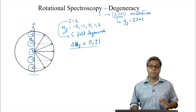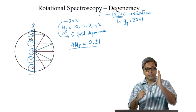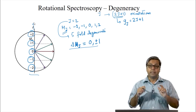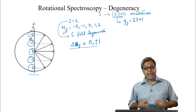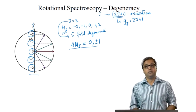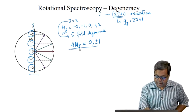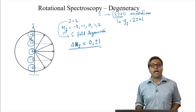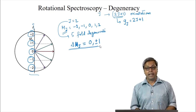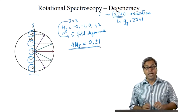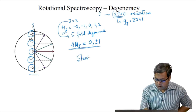This can only happen if an electric or magnetic field is applied externally in a particular direction. If an electric field is applied in a particular direction, there will be an interaction between the electric field and the dipole moment. This interaction depends on the spatial orientation of the molecule. So the energy of the system will now depend on the mj quantum number, and the selection rule delta mj equals plus minus 1 will affect the rotational spectrum. Thus, the degeneracy will be lifted, and this lifting of degeneracy in the presence of an externally applied electric field is known as the Stark effect.